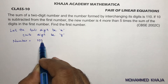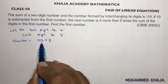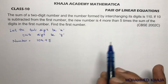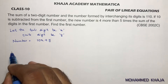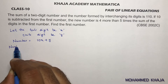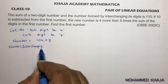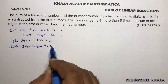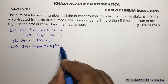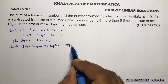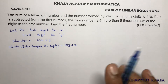The two-digit number is written as 10x + y. For a three-digit number, we write 100x + 10y + z. If we interchange the digits, in place of x we write y and in place of y we write x, so the number after interchanging becomes 10y + x.